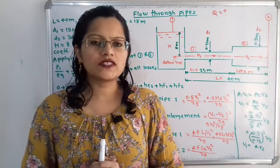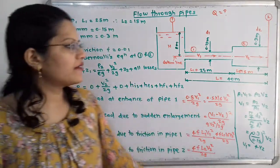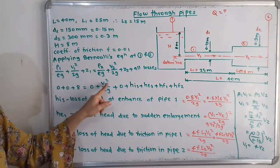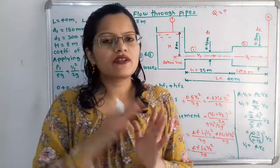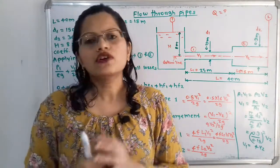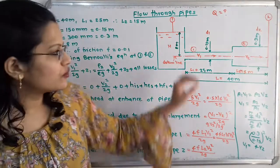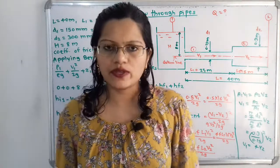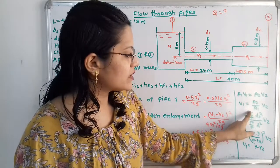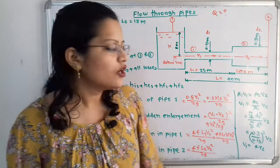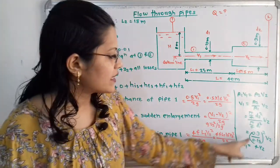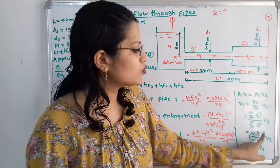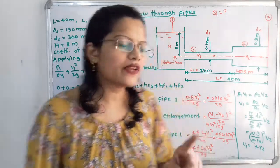All the losses are in terms of V1 and V2, both of which are unknown. To simplify, we apply the continuity equation: A1V1 = A2V2, so V1 = (A2/A1)V2 = (D2/D1)²V2. Substituting D2 = 0.3 and D1 = 0.15 gives (0.3/0.15)² = 4, so V1 = 4V2.